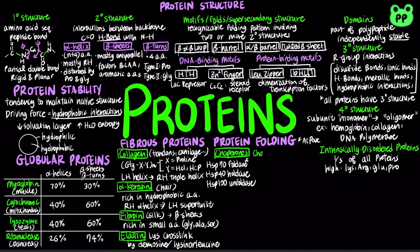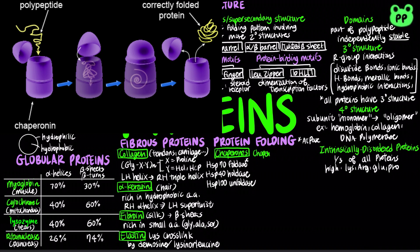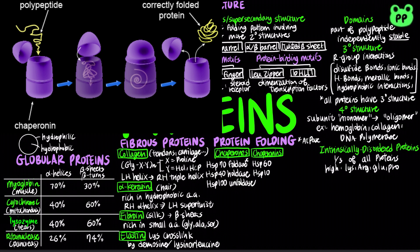In addition to chaperones, chaperonins are elaborate protein complexes required for folding of some cellular proteins that do not fold spontaneously. In eukaryotes, chaperonins consist of heat shock protein 60 and heat shock protein 10, whereas in bacteria, chaperonins consist of GroEL and GroES.